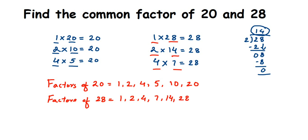Now we have both factor lists. To find the common factors, we take the numbers present in both lists. 1 is present in both — I'll circle it. 2 is also present in both. 4 is present in both. And that's it — nothing else appears in both lists. So the common factors are 1, 2, and 4.